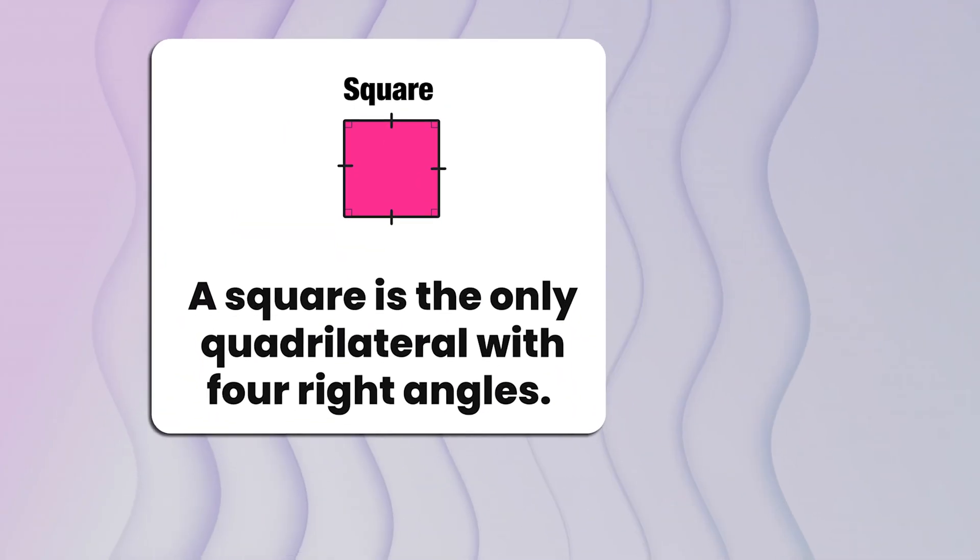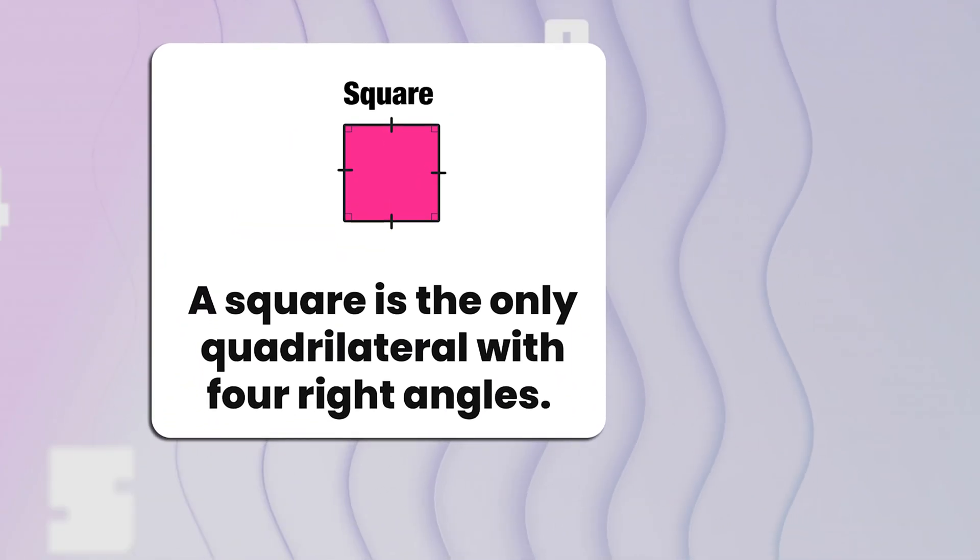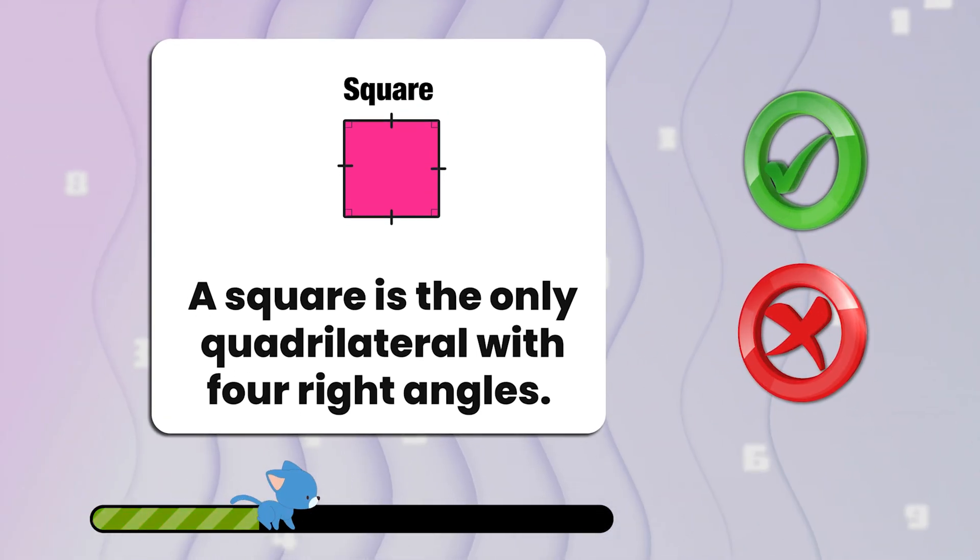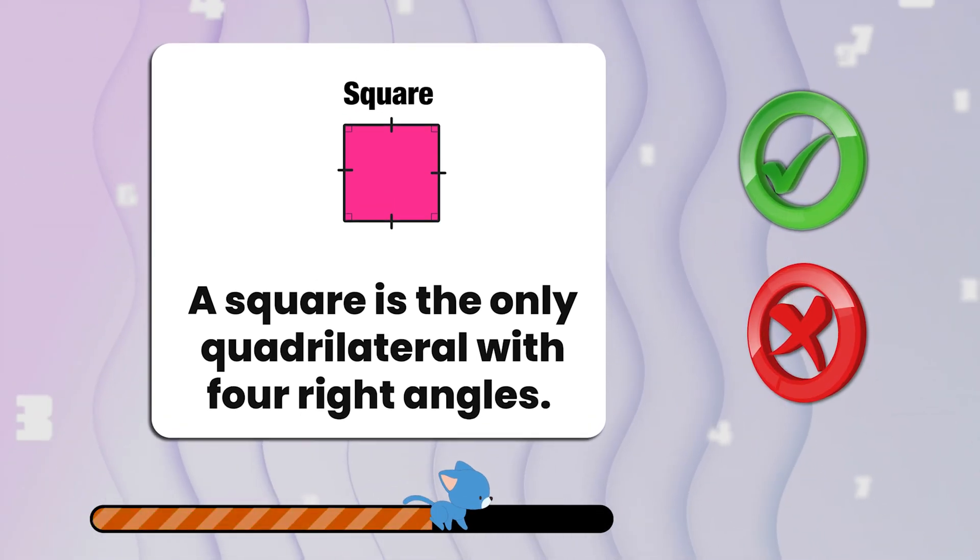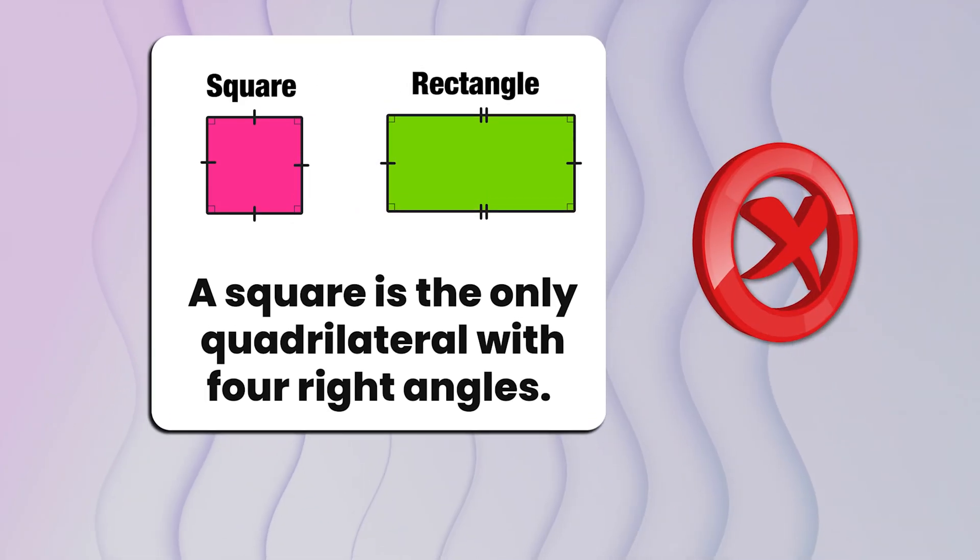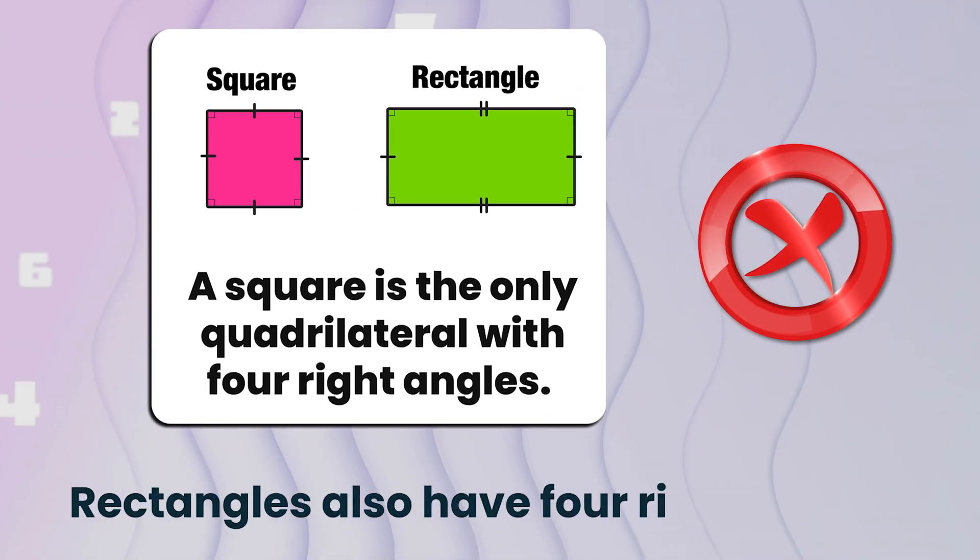And number thirteen. A square is the only quadrilateral with four right angles. True or false? That's false. Rectangles also have four right angles.